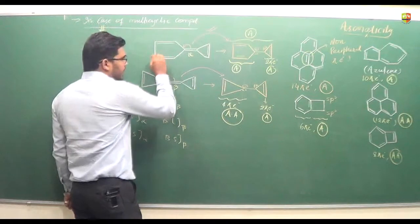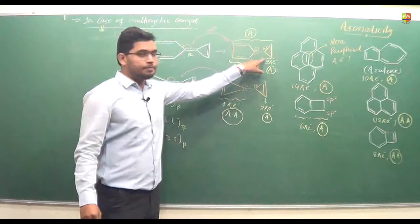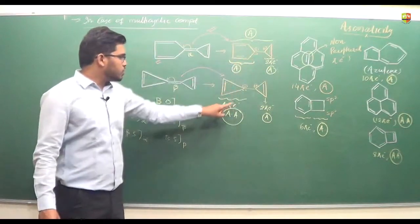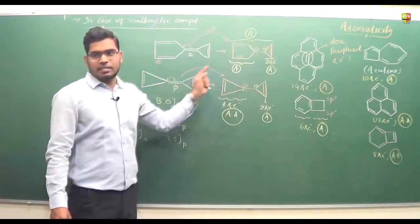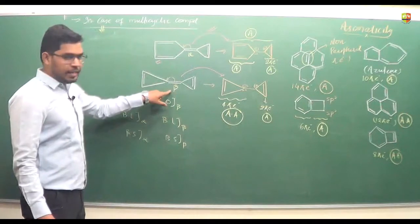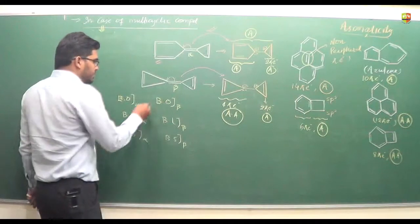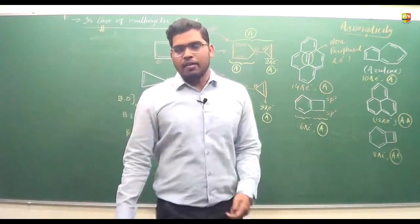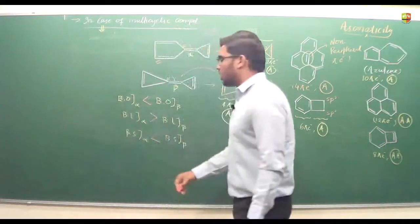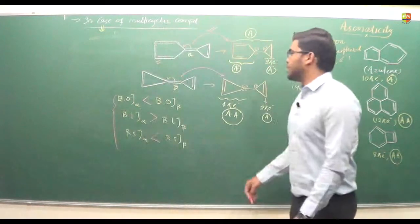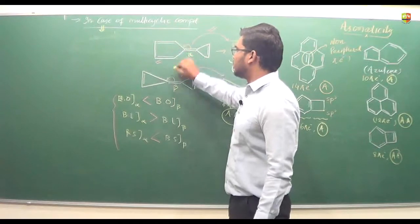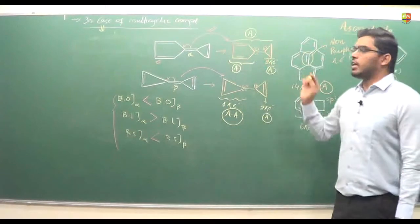This molecule will exist more in the form where bond order of alpha is 1, because that leads to complete aromaticity and is more stable. The first conversion is more favorable because of aromaticity. Since the second conversion has one anti-aromatic part, that tendency is slightly less. Therefore, the bond order of beta is slightly more than 1. Bond order of beta is greater than that of alpha; when bond order is more, bond strength is also more; and when bond strength is more, bond length is less.